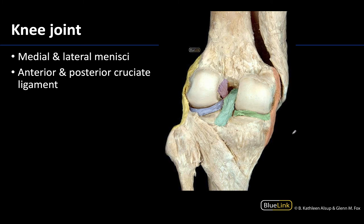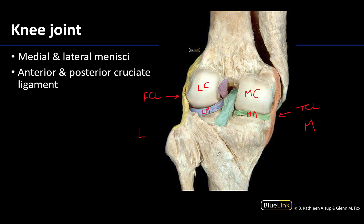Now looking at a posterior view to get our bearings on those structures — we cannot see the patellar ligament because this is posterior. You can see a really nice view of the femoral condyles: this would be the lateral condyle and this would be the medial condyle. I can determine that quickly because I can see the head of the fibula here, which is always lateral, so the other side is medial. This would be the TCL here and this would be the FCL. The menisci sit right on top of those tibial condyles — this would be the medial meniscus and this will be the lateral meniscus — matching up with those condyles on the same medial and lateral sides.